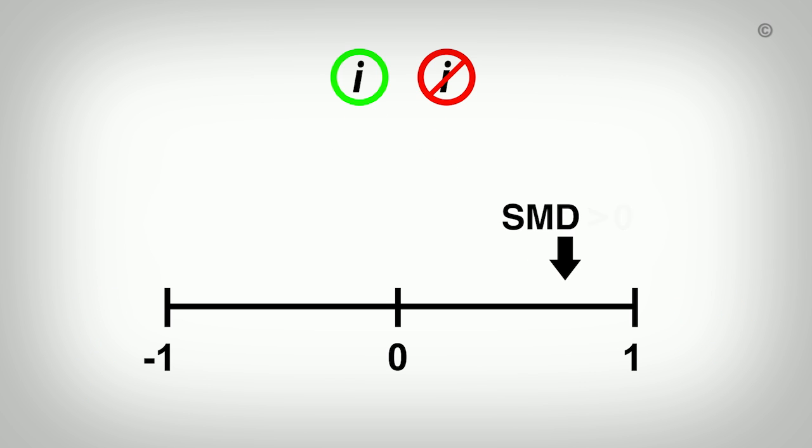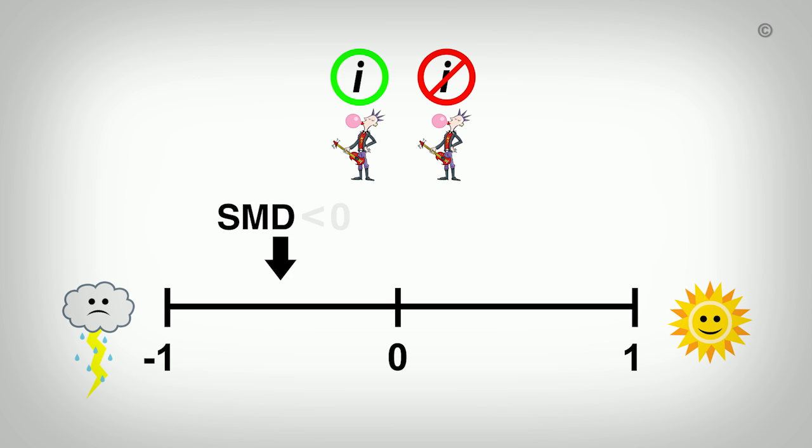An SMD above zero can be a positive or negative finding, depending on the outcome being measured. The same applies when it's below zero. In our teen mental health example, we want to see an SMD above zero because it would indicate that teens exposed to the intervention had more positive mental health scores than those not exposed, suggesting that the intervention was effective.